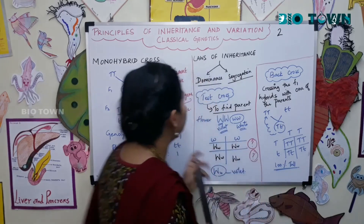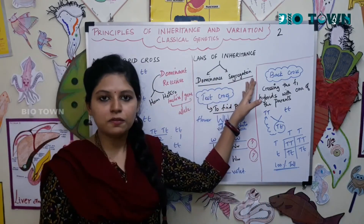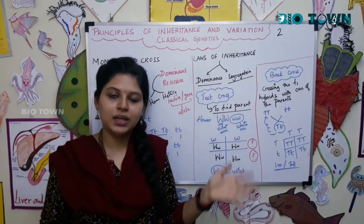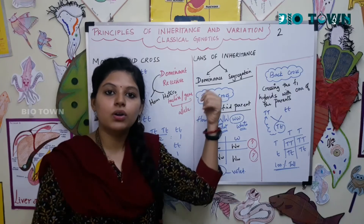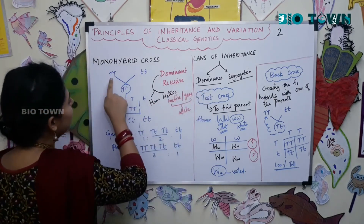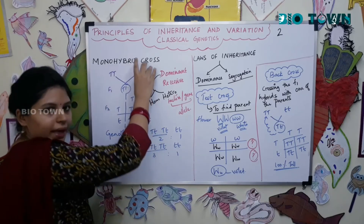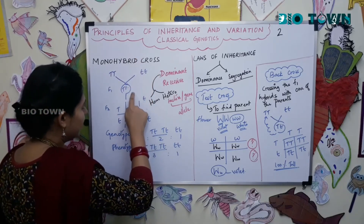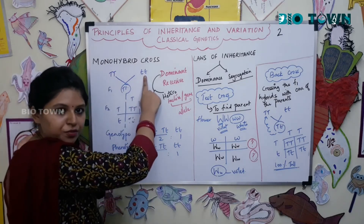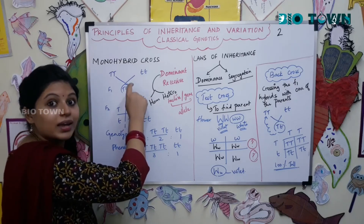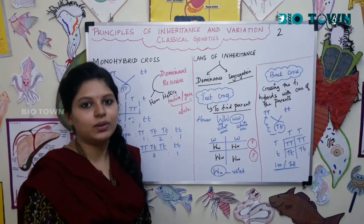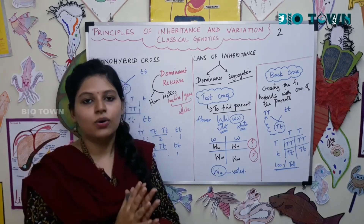From the monohybrid cross, test cross, and back cross, we derive two laws of inheritance: the law of dominance and the law of segregation. The law of segregation will be explained in a later experiment. The law of dominance, based on the monohybrid cross, states that in the F1 generation there is always a dominant character expressed — the tall plant character dominates over the dwarf plant character.